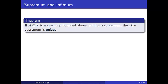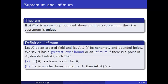Similarly, we can define the greatest lower bound of a set. Let X be an ordered field and let capital A be a non-empty subset of X which is bounded below. We say A has a greatest lower bound, or an infimum, if there is a point in X which we denote inf of A such that the inf of A is a lower bound for A, and if B is another lower bound for A, then inf of A is greater than or equal to B. You will explore this definition more in homework.